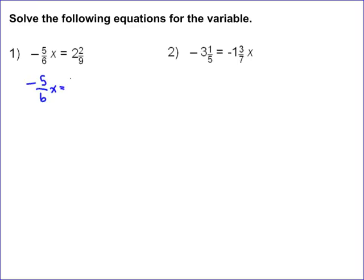2 and 2 ninths becomes 20 over 9. Now, whenever we have just a multiplication problem, which is what this is, you've got negative 5/6 times x.